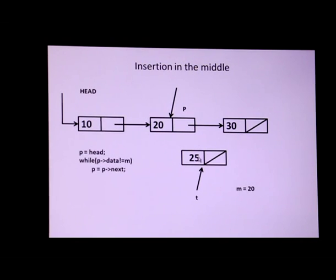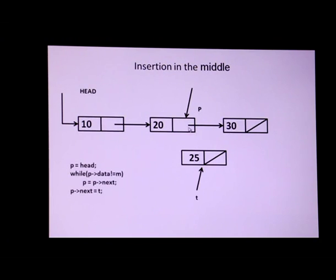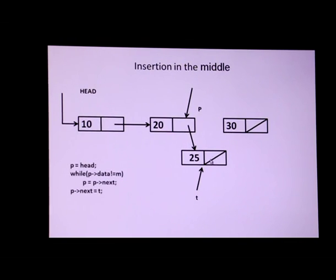Now I have to make the pointer rearrangement so that 25 is inserted between 20 and 30. T's next part should contain the address of 30, which is stored in P's next part. You may ask: why can't I make the pointer rearrangement P.next = T first? If P.next = T is executed first, then T's next should have the address of 30 — but 30's address, stored in P.next, has already been overwritten. So this method of pointer rearrangement is wrong.